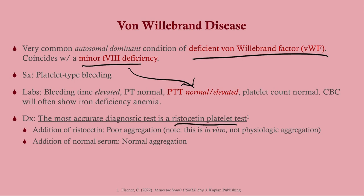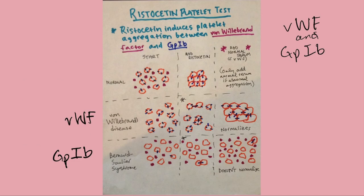The most accurate diagnostic test for Von Willebrand's disease is the ristocetin cofactor assay. When we add ristocetin, we get poor aggregation because the Von Willebrand factor is missing — there is nothing for the platelets to adhere with. However, when we add normal serum — which contains Von Willebrand factor — we get normalization, because the GP1b is intact. Adding Von Willebrand factor corrects the interaction, confirming Von Willebrand's disease. Remember: normal serum has Von Willebrand factor but not GP1b, since GP1b is part of the platelet.